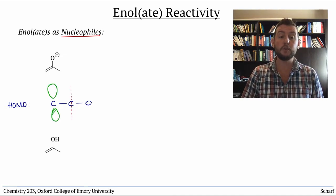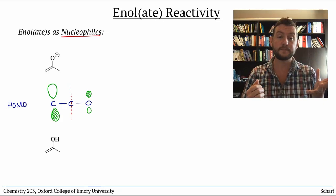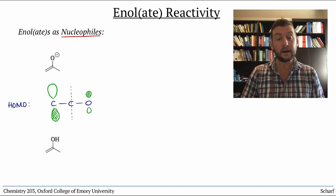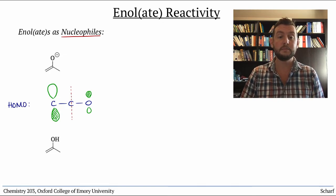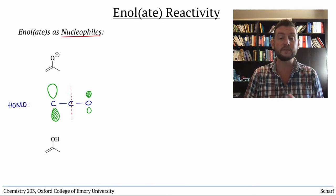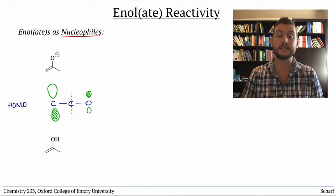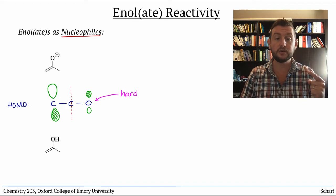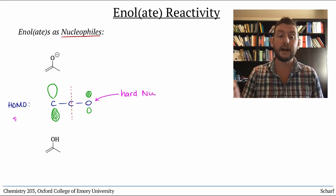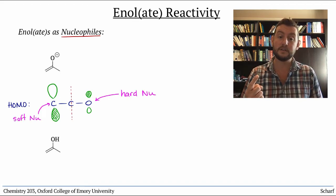It turns out that the alpha carbon has the larger lobe in the HOMO, but the oxygen is where most of the negative charge is localized. This makes the oxygen a hard nucleophilic site, and the alpha carbon a soft nucleophilic site.